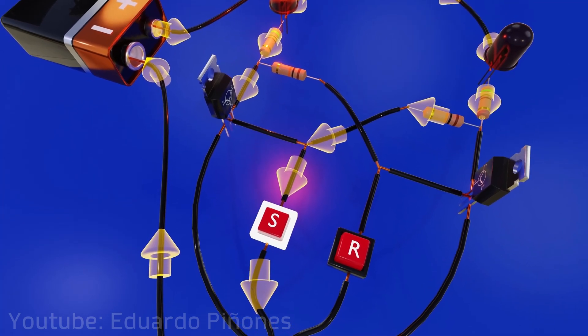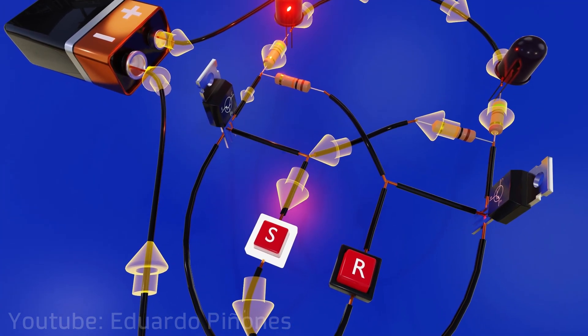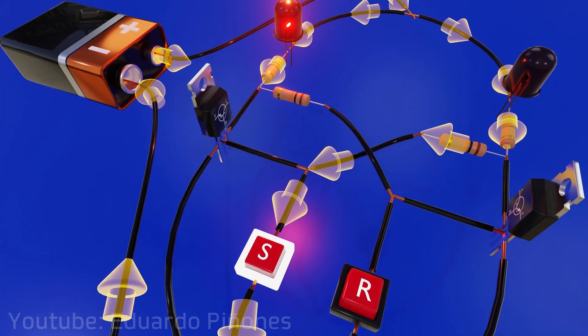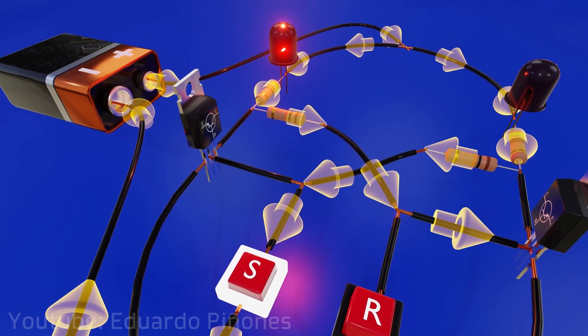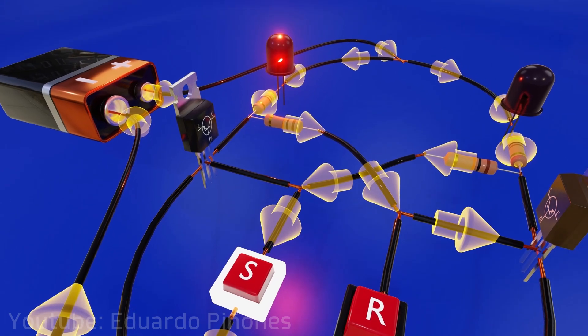Third, since the current that used to come from above will no longer be able to pass through the transistor, it will have to be diverted to the right, passing through the resistor and reaching the base of the other transistor.